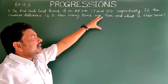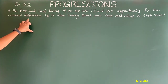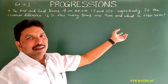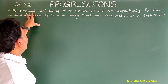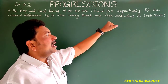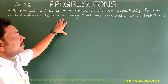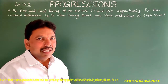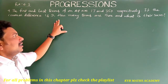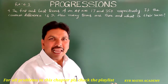This is the fourth question: the first and last terms of an AP are 17 and 350 respectively. If the common difference is 9, how many terms are there and what is their sum? Here the first and last terms are given and common difference d is also given. We have to find the number of terms n and their sum Sn.